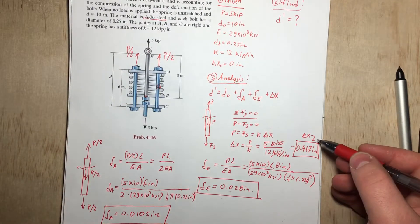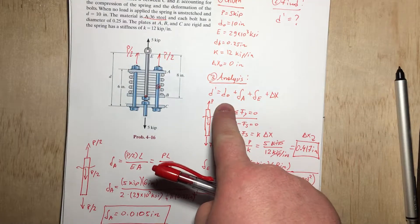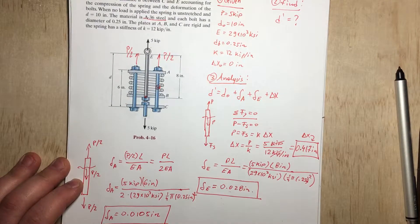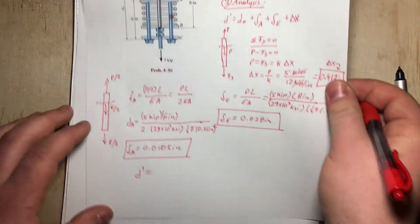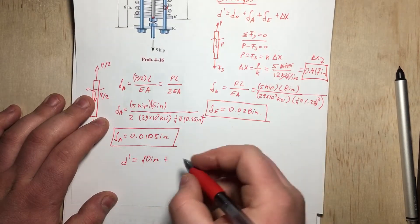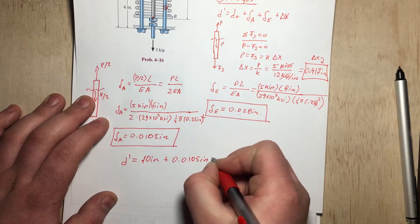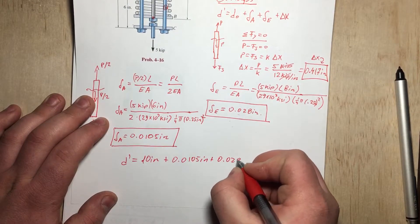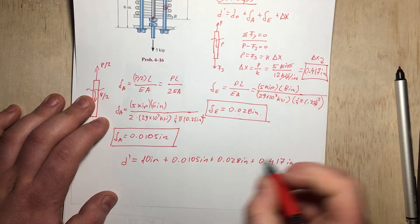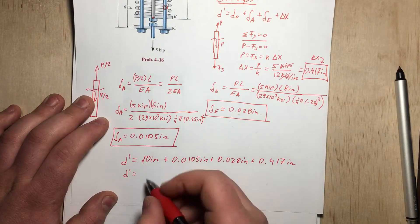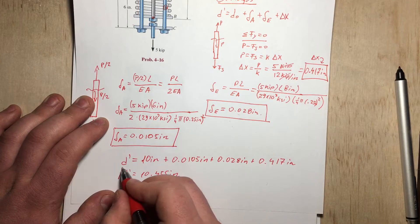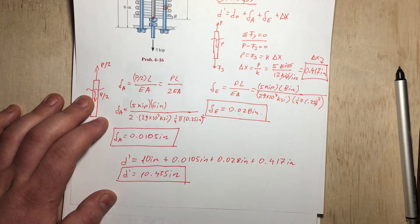Okay, so as you can see, we already found delta X, we found delta E and delta A, and we already know d0. So we can just go ahead and plug everything in to find d', which is what we're after. So let me do that down here. We have d' equals d0, which is 10 inches, plus delta A, we just found that to be 0.0105 inches, plus delta E, which was 0.028 inches, plus delta X, which was 0.417 inches. So d' is going to be equal to 10.455 inches. And that should be our answer.